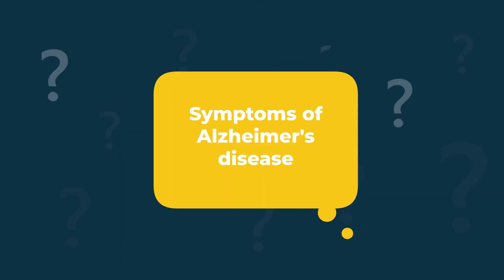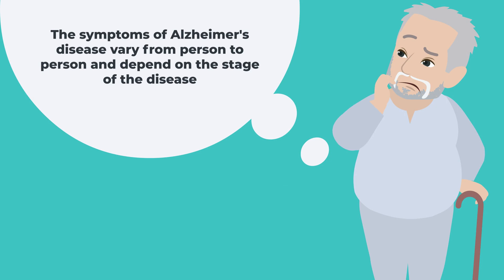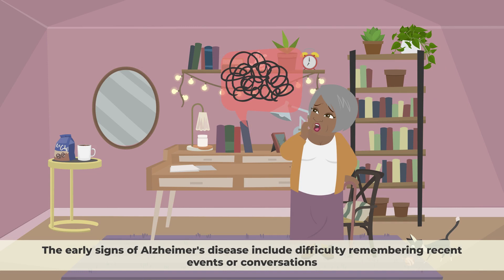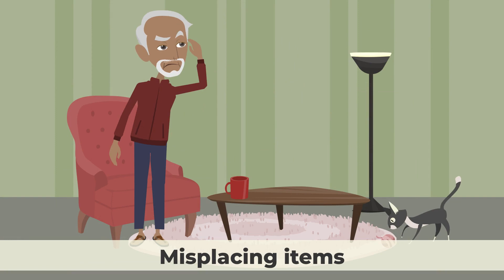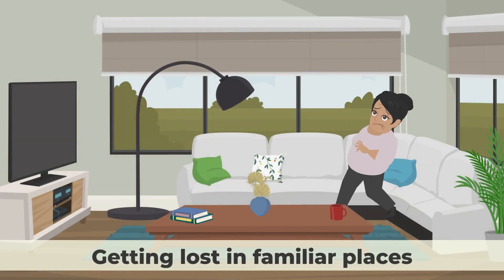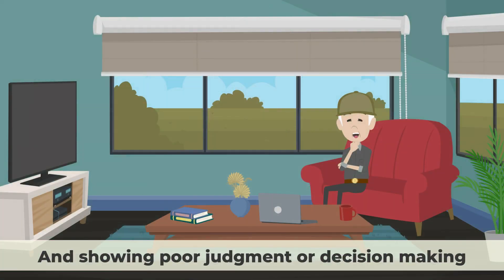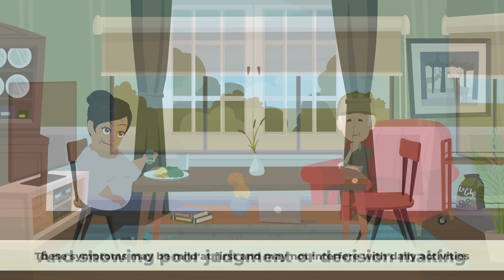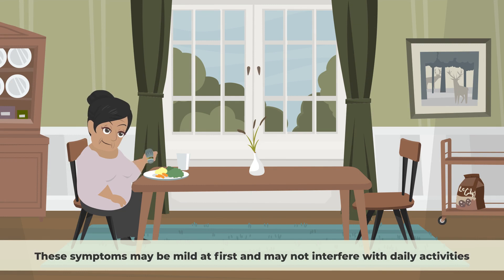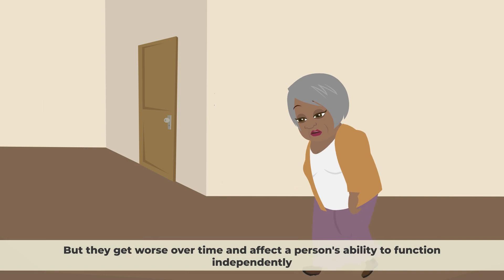The symptoms of Alzheimer's disease vary from person to person and depend on the stage of the disease. The early signs include difficulty remembering recent events or conversations, misplacing items, getting lost in familiar places, having trouble finding words or expressing thoughts, and showing poor judgment or decision making. These symptoms may be mild at first and may not interfere with daily activities, but they get worse over time and affect a person's ability to function independently.